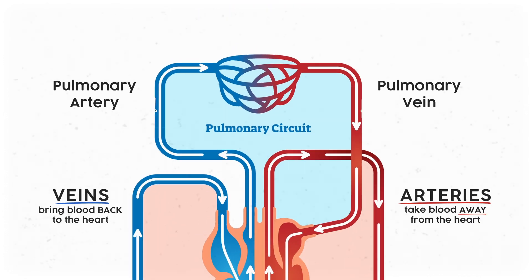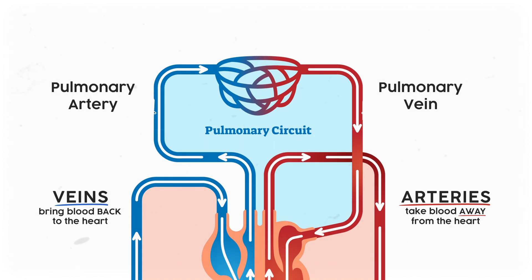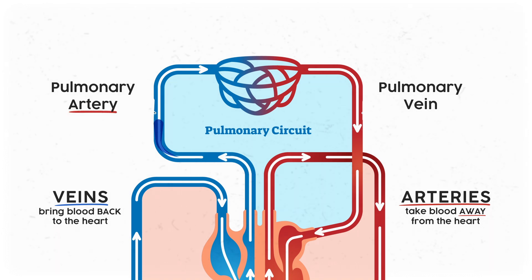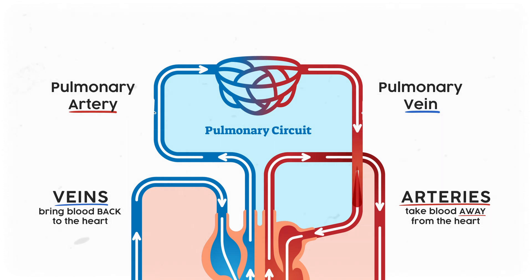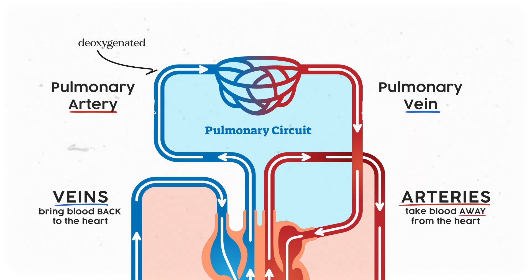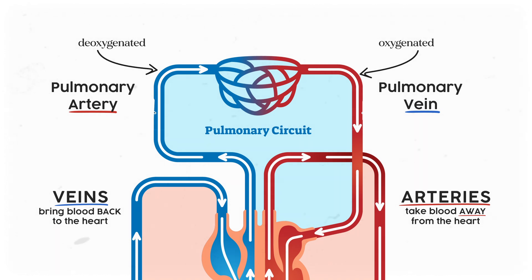The big naming exception you need to be aware of is within pulmonary circulation, when blood vessels go from the heart to the lungs and then back to the heart. In that case, the pulmonary artery is still going away from the heart and the pulmonary vein is still returning to the heart. But since it's getting shipped off to receive oxygen, blood in pulmonary circulation is deoxygenated in the artery and oxygenated in the vein.